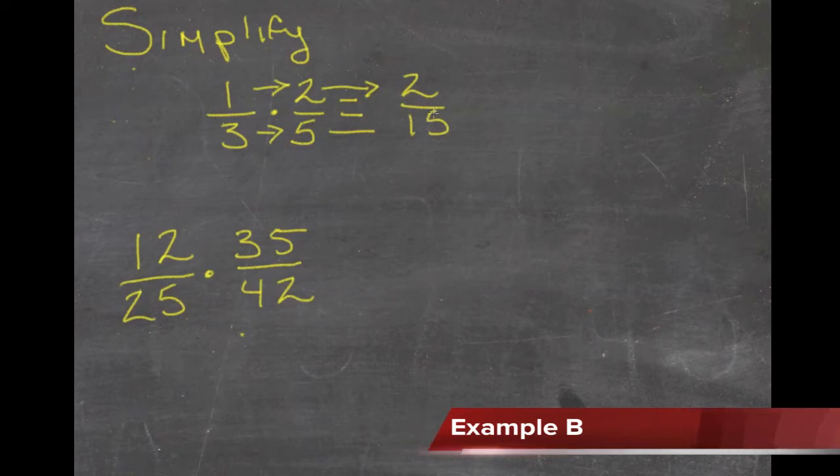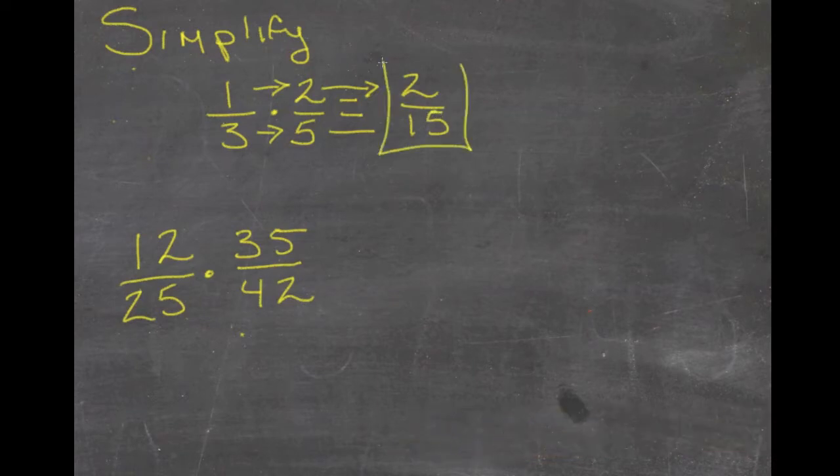Now if this reduced, that would be our last step, but this one doesn't. So 2/15 is our answer.